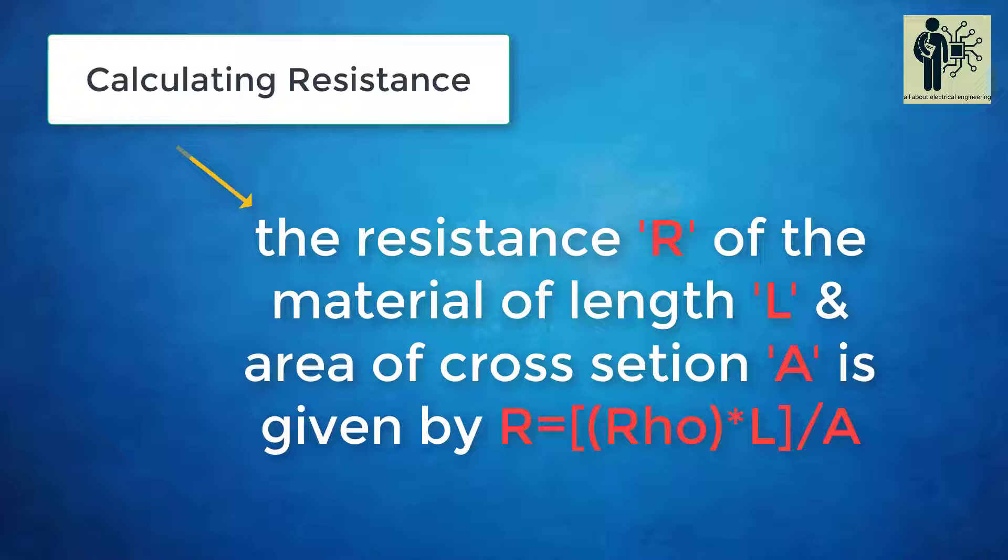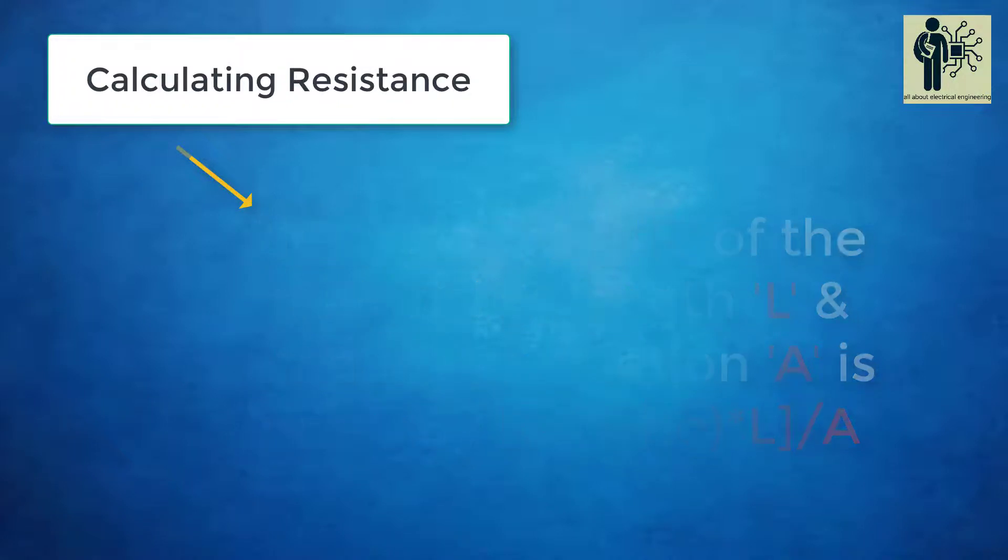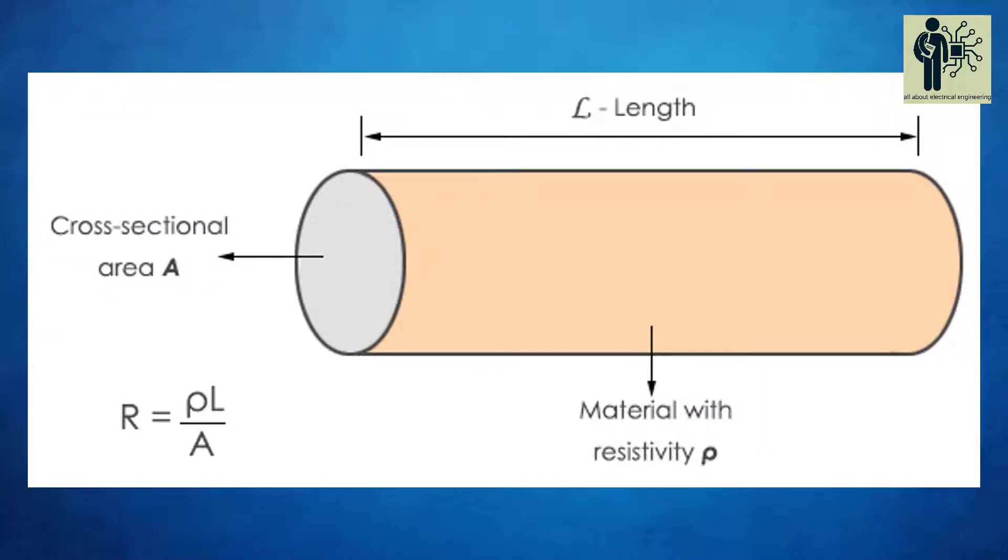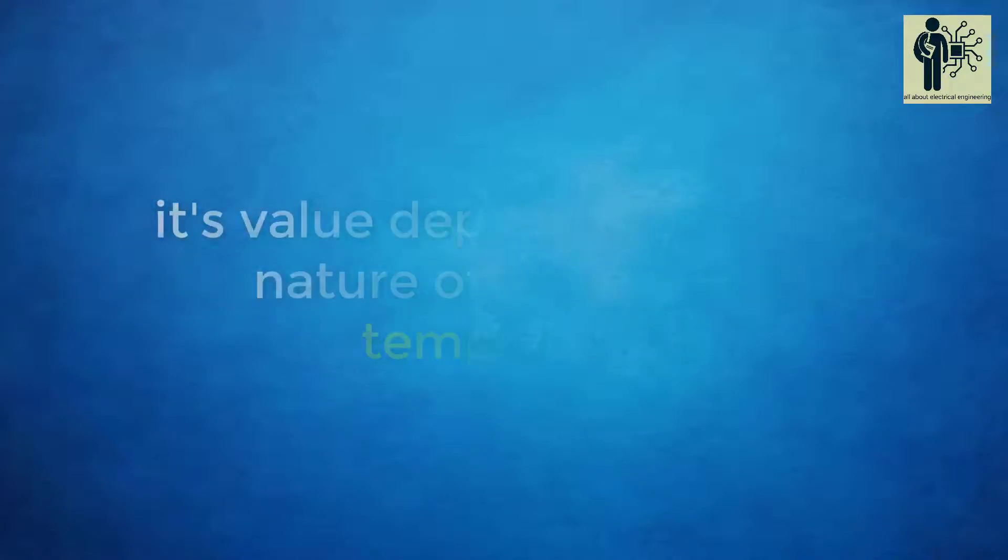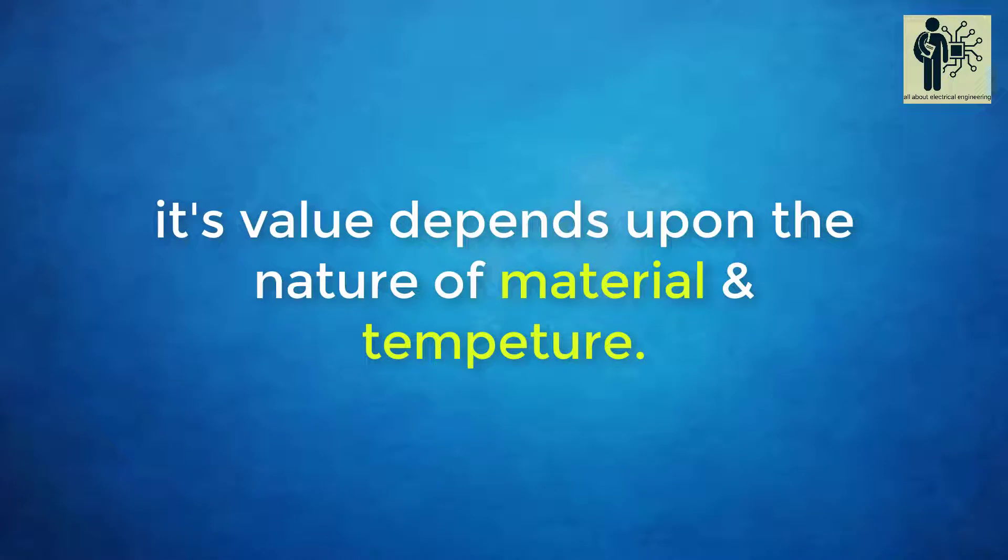ρ is a greek letter and it is called resistivity or specific resistance of the material. Its value depends upon the nature of material and temperature. The SI unit of specific resistance is ohm meter.